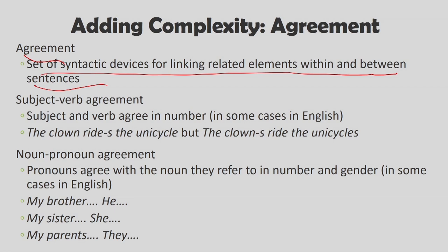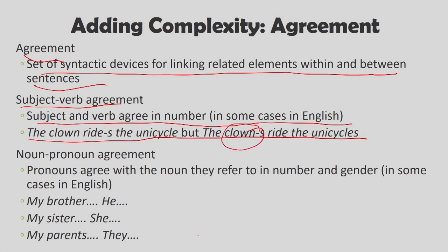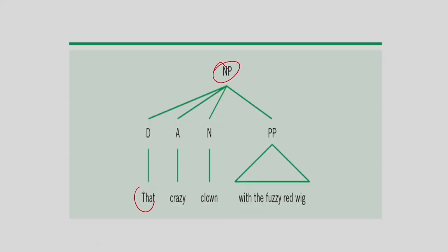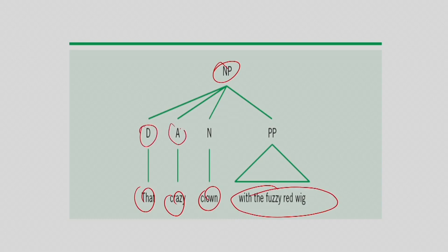Agreement is a set of syntactic devices for linking related elements within and between sentences. In English, if the subject is in third person and the verb in present tense, subject and verb must agree in number. For example, 'the clown rides the unicycle' — if clown becomes plural clowns, the verb drops the s: 'the clowns ride the unicycles'. Noun-pronoun agreement requires pronouns to agree with the noun they refer to in number and gender — 'my brother' becomes 'he', 'my sister' becomes 'she', 'my parents' become 'they'.